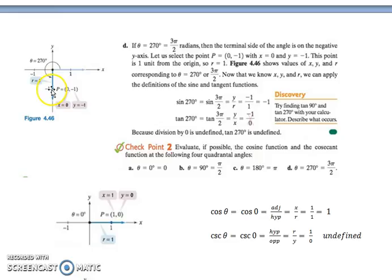So for 270, sine would be y over r, which would be negative 1 over 1. So negative 1. For the tangent, we're going to have negative 1 over 0 because it's y over x. So you get negative 1 over 0, which is undefined.